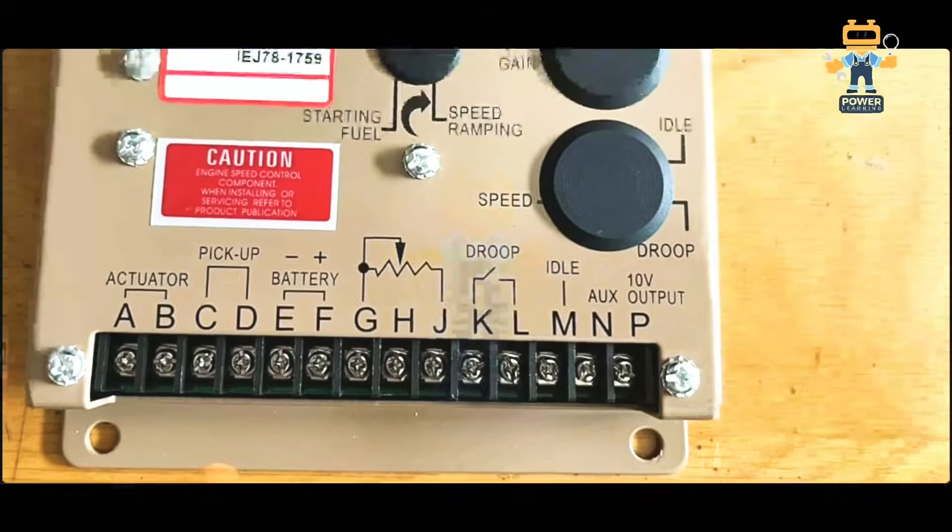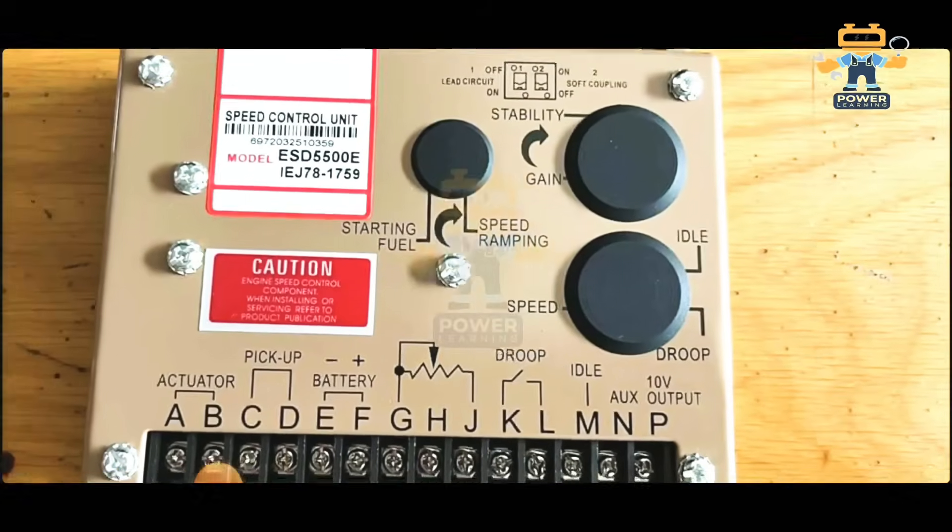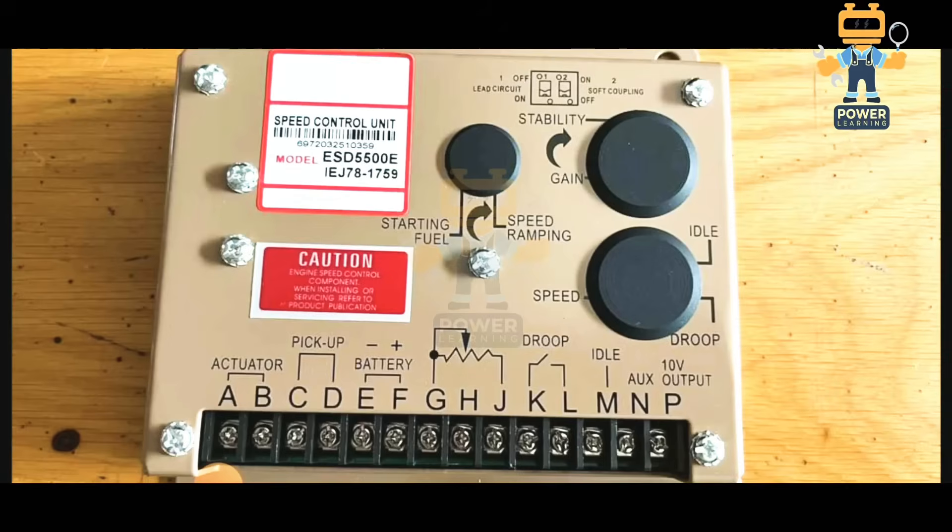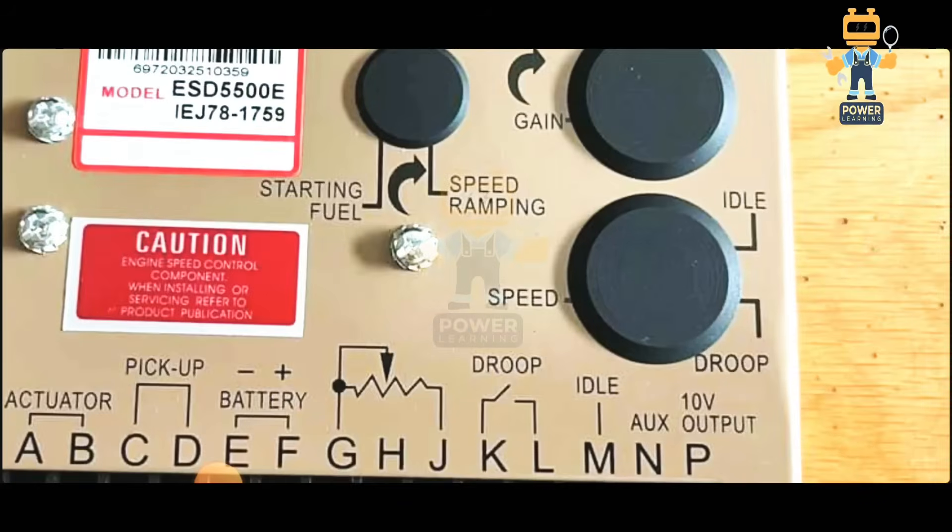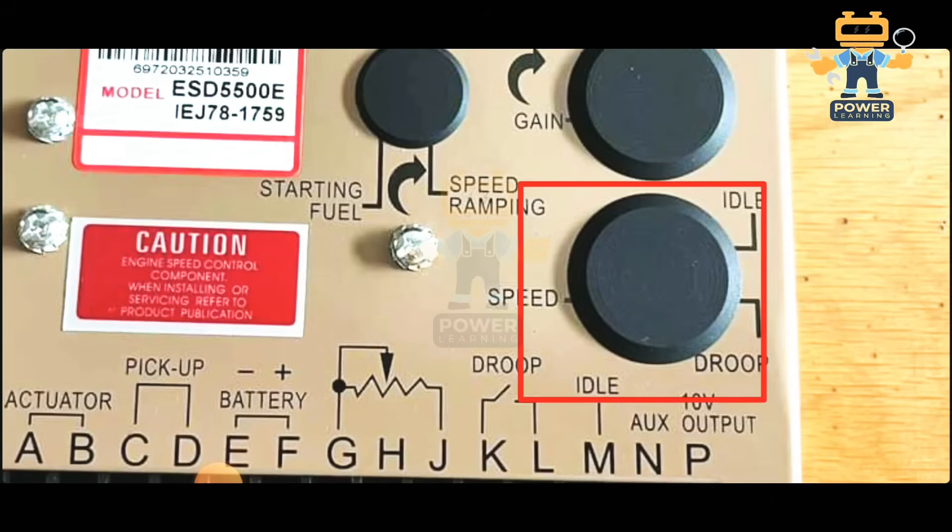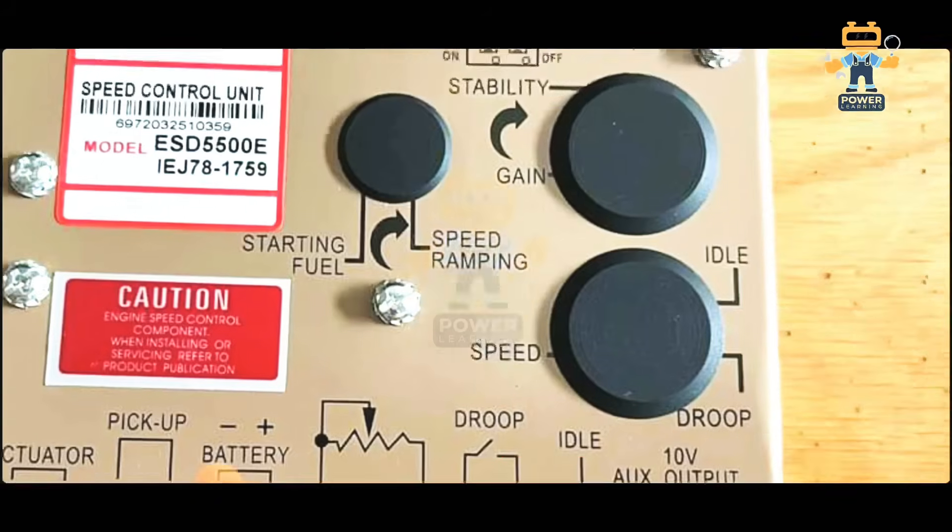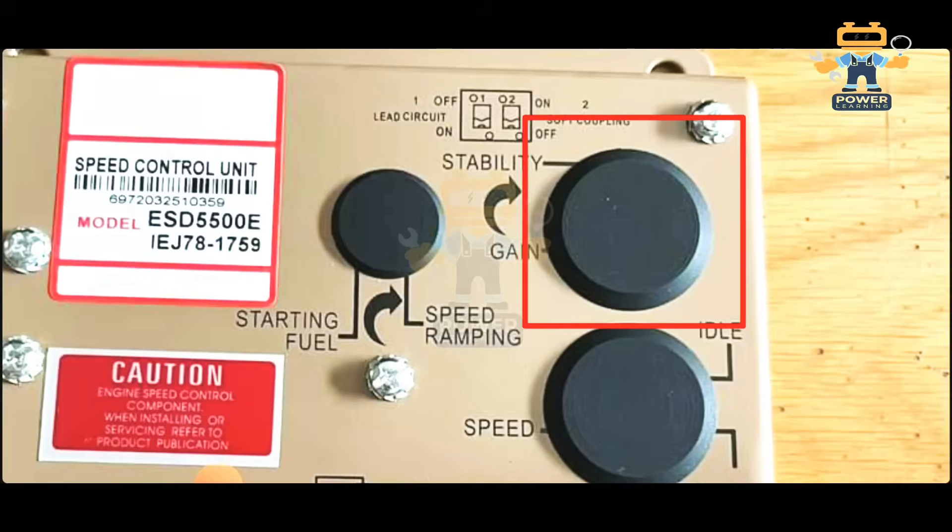After that, here if you see we have this black cover. If you remove it, you will find inside there is a potentiometer to adjust the droop and idle speed. Here on this above cover, if you remove it, you will set engine gain and stability - there are two potentiometers inside, so from here you can stabilize the engine speed if there is variation.